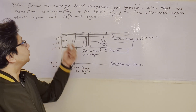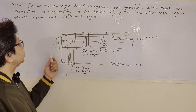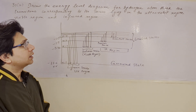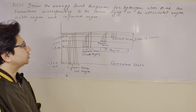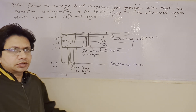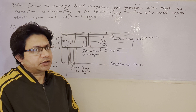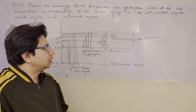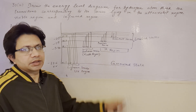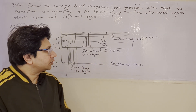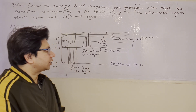The question is: draw the energy level diagram for the hydrogen atom, mark the transitions corresponding to the series lying in the ultraviolet region, visible region, and infrared region. In this problem, we have to draw the spectrum which shows the different regions — the ultraviolet region, visible region, and higher region — by showing the hydrogen spectrum diagram.